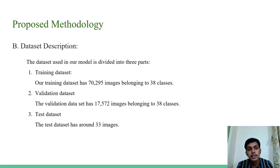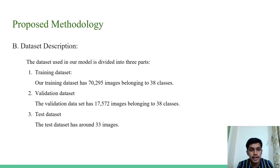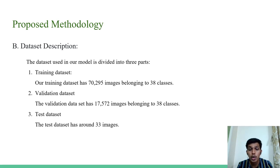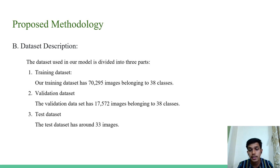Dataset description: our model's data is divided into three parts — training, validation, and test datasets. The training dataset has 70,295 images belonging to 38 classes. The validation dataset has 17,572 images belonging to 38 classes, and the test dataset has only 33 images.